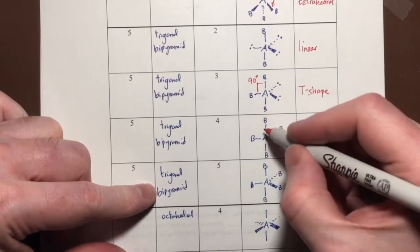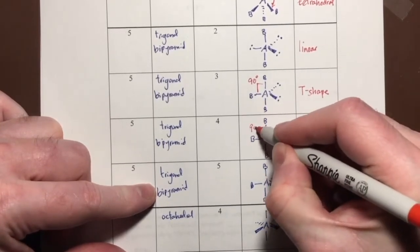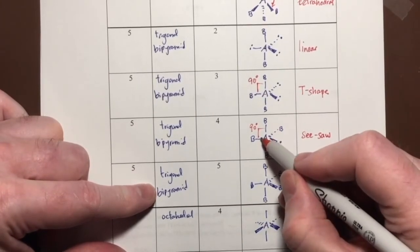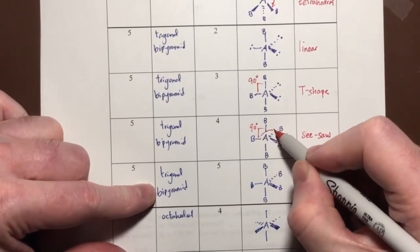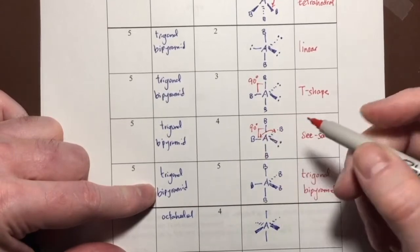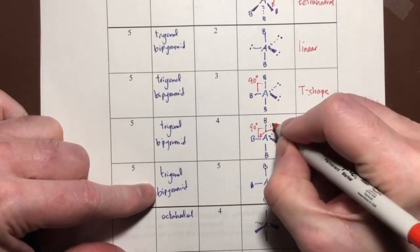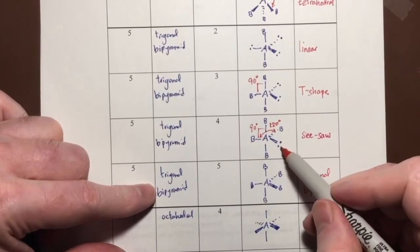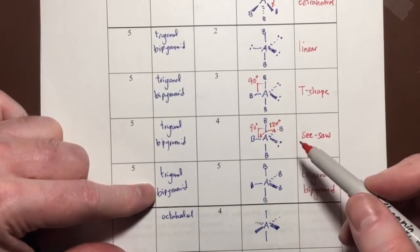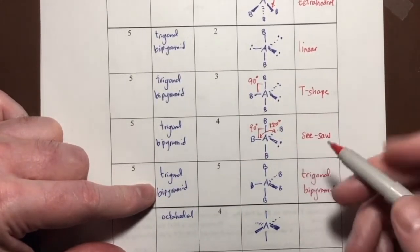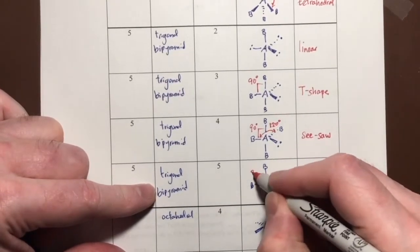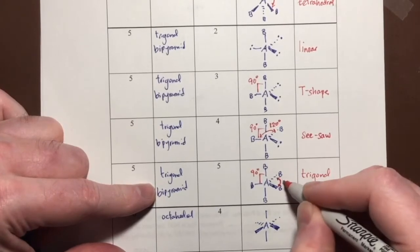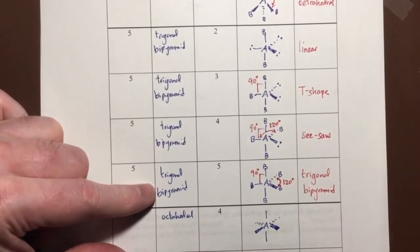Going back to these shapes: for the see-saw, this is a 90-degree angle, and between the equatorial positions here and here, these are approximately 120 degrees. Because of the lone pair, these bond angles will be slightly less. For the trigonal bipyramid, the angle is again 90 degrees, and the bond angles between the equatorial positions are 120 degrees.